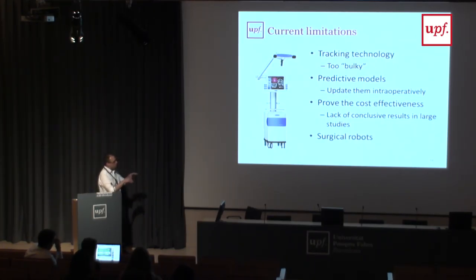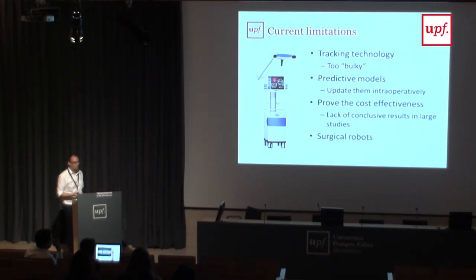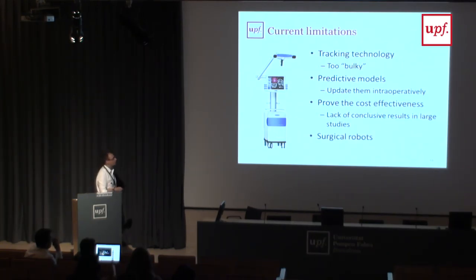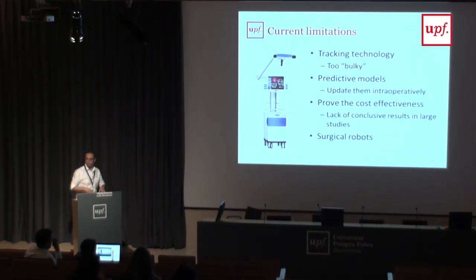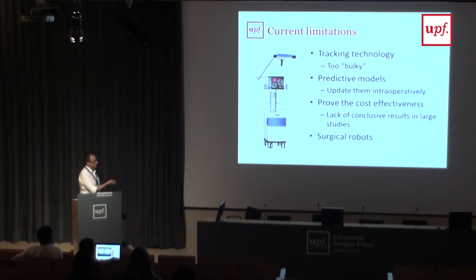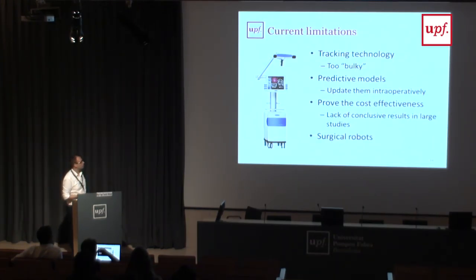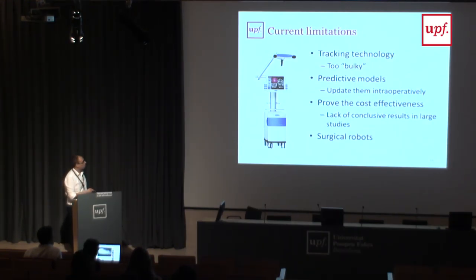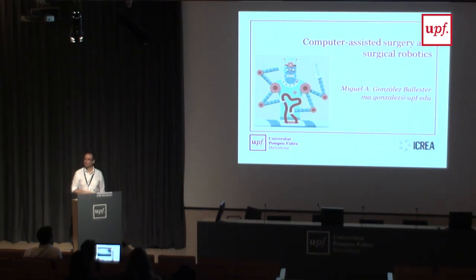There is a need to update information we have preoperatively based on intraoperative findings — for example, if we are removing tissue from a tumor, the plan should be updated relative to what we did, not just remain as the original preoperative plan. This technology is currently available in many hospitals, but there is still a lack of strong conclusive results proving cost-effectiveness — proving the improvement in patient treatment when using this technology. People say these systems are expensive, but if they save operating room time, which is the highest cost in the hospital, then actually it's cheaper to use them. In terms of surgical robotics, it's just not mature enough yet, though it's a bit the future and will come.